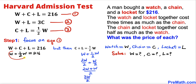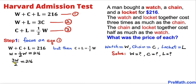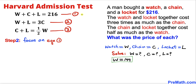This gives us W + W/2 = 216. Simplifying the left-hand side, we get 3W/2 = 216. Multiplying both sides by 2/3 to isolate W, the terms cancel and we get W = 144.